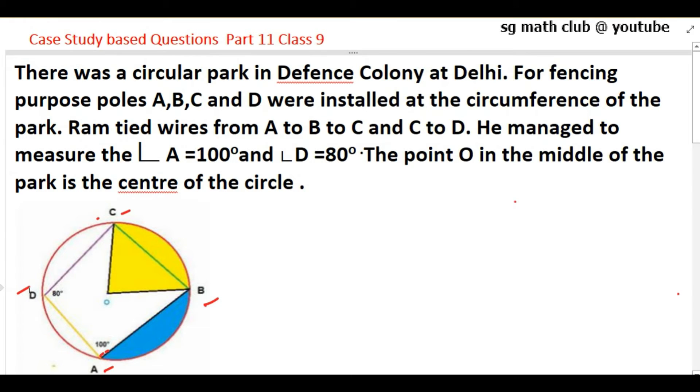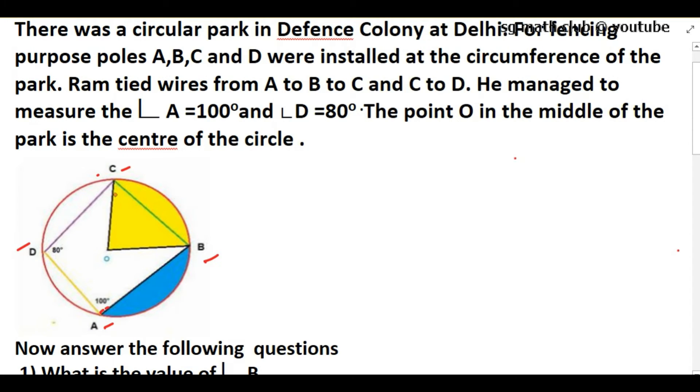Ram tied wires from A to B, B to C, and C to D. He managed to measure angle A as 100 degrees and angle D as 80 degrees. Point O is the center of the circle.